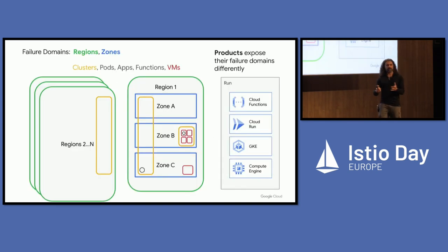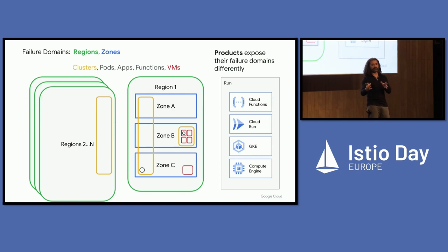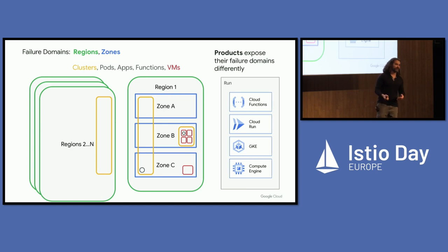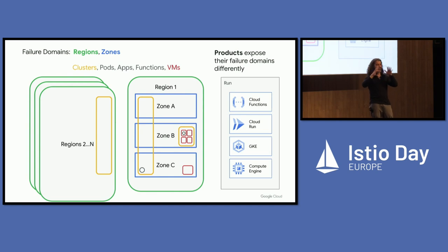In cloud, we think of failure domains simplified into just two realms: regions and zones. Zones are akin to data centers or campuses of data centers that are co-located. Regions are simply collections of zones that are geographically near one another. Everything else — Kubernetes clusters, VMs, databases — resides in one of these two locations. If you think in those terms and think about what you want to be resilient against, then it's a lot easier.